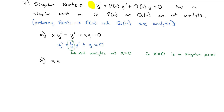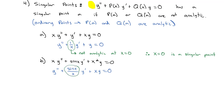We need to be careful when comparing with xy'' + sin(x)y' + x²y = 0. Dividing by x gives sin(x)/x times y' plus xy = 0. You may remember from calculus that sin(x)/x can be written as a Taylor series. So even though the function appears undefined at 0, we can write it as a function of its derivatives, and so 0 is actually an ordinary point. Therefore there are no singular points in this expression.